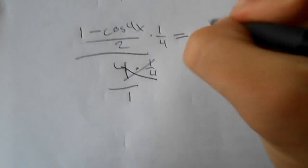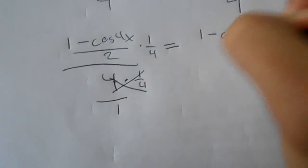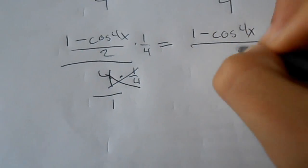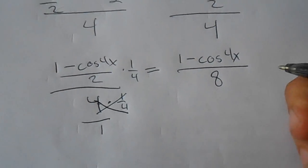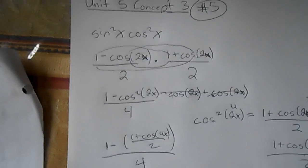So this will get us the answer: (1 - cos(4x))/8. And that's the answer for sin²(x) times cos²(x).